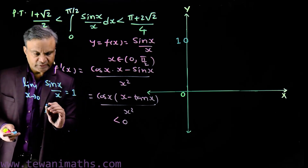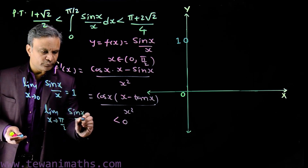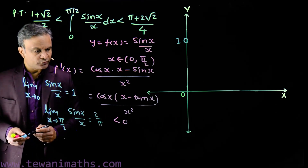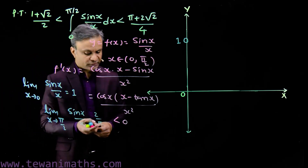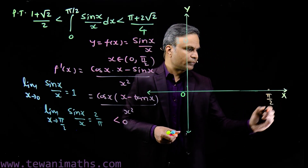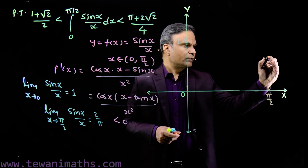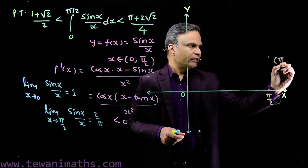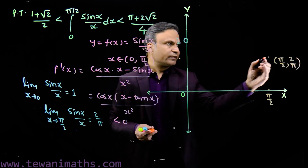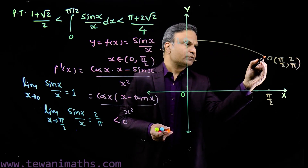At x = π/2, the limiting value is sin(π/2) / (π/2) = 2/π. This value is less than 1, as expected since the function is decreasing. The coordinates of this point are (π/2, 2/π). We draw the decreasing graph, and again we have a blank point here because this endpoint does not lie on the graph.